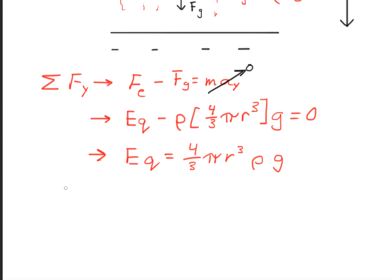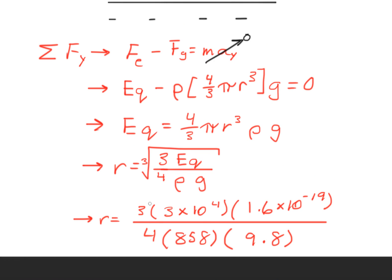So when we plug in the numbers for r, we take the electric field, which is right here, and we take the charge of the particle, 1.6 × 10⁻¹⁹ coulombs.